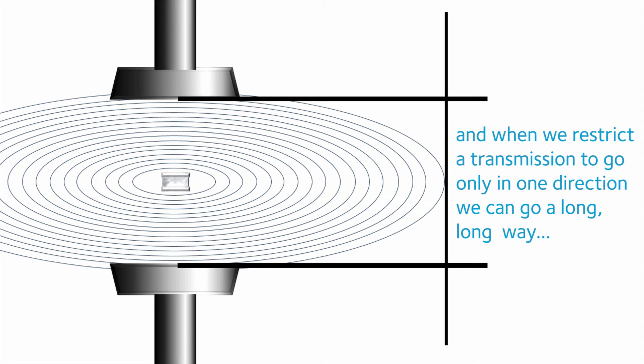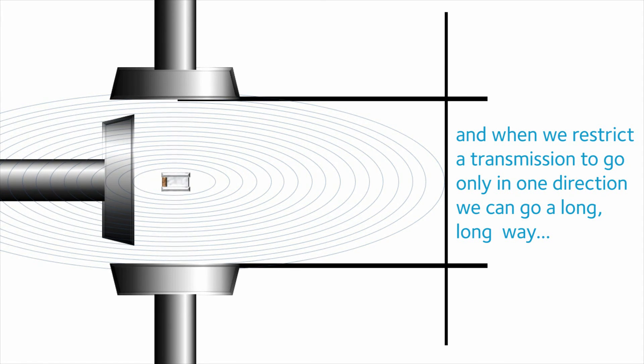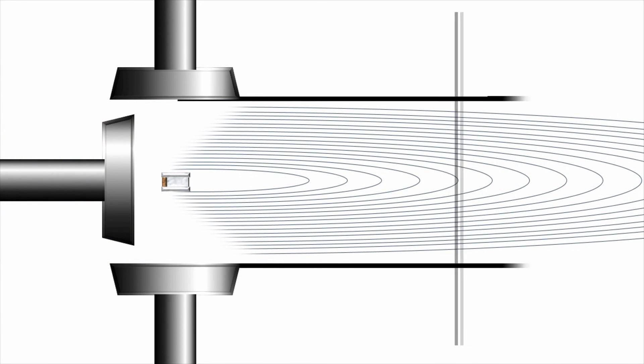By directing the signal in a narrow beam, we are able to create point-to-point systems that can operate at great distances but require careful alignment.